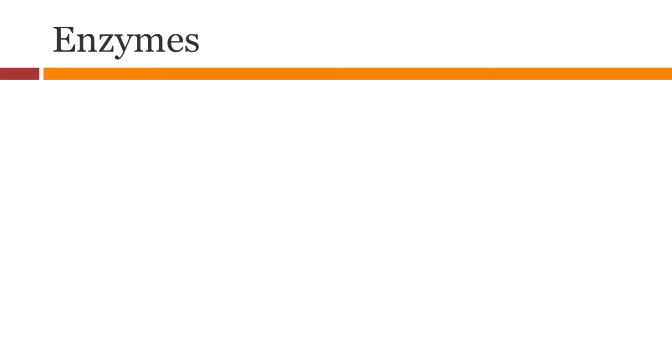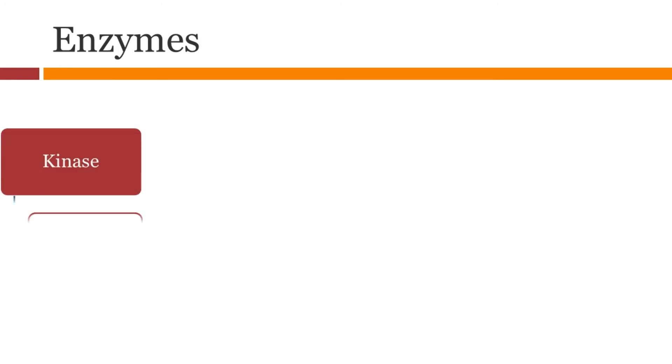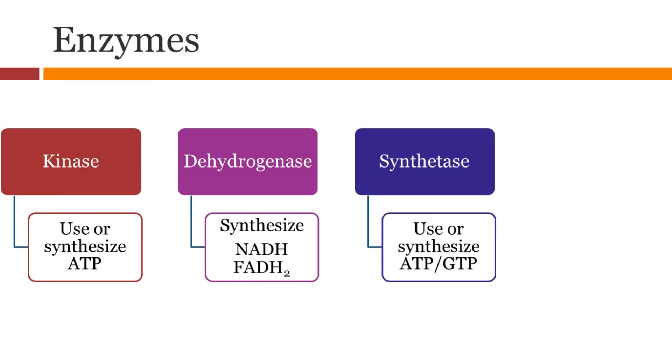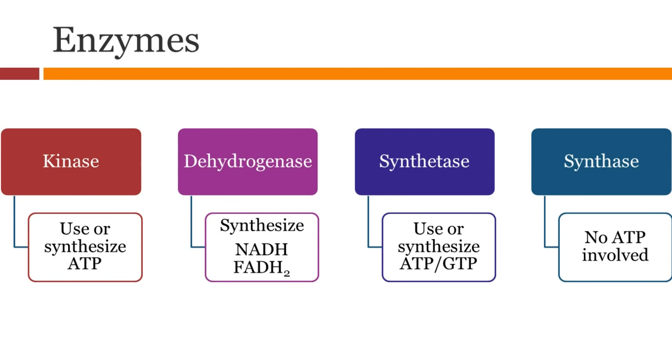Let's look at the different types of enzymes we have encountered so far and what they do. Kinases use or synthesize ATP. Dehydrogenase, on the other hand, make NADH and FADH2. Synthetase makes or uses ATP. Synthase, on the other hand, does not involve ATP or NADH.